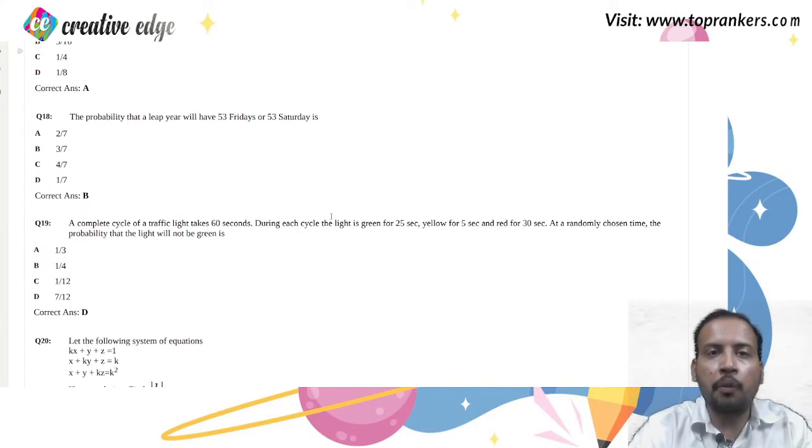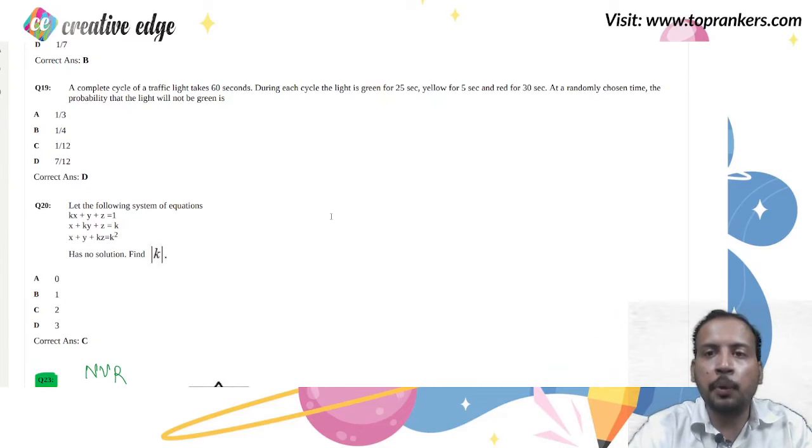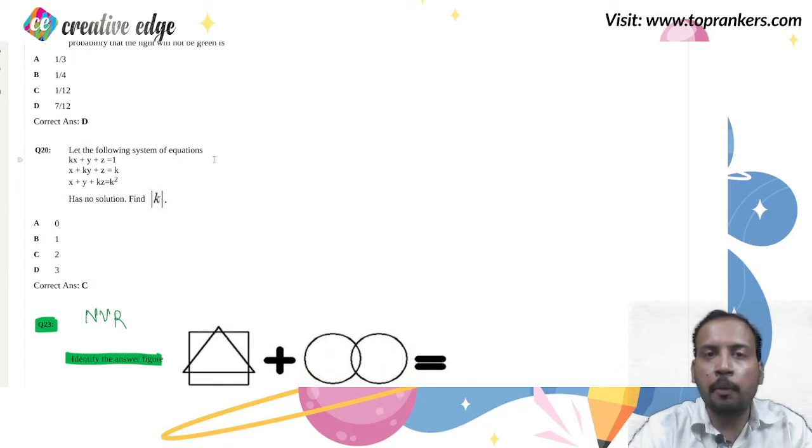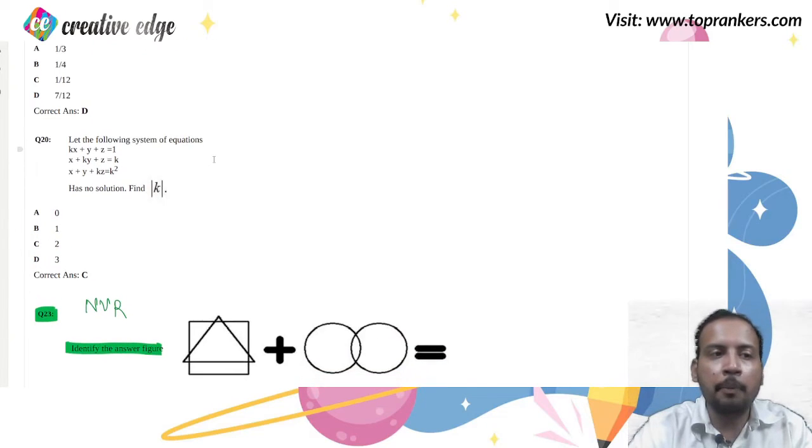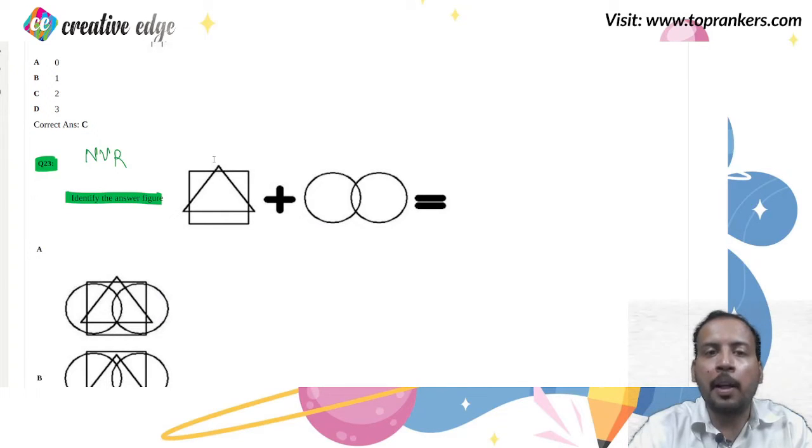The next question is of probability. If you observe the next question as well, this is also of probability. The next question is of matrices and determinant, that is question number 20. Now this was about mathematics portion.